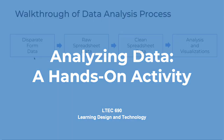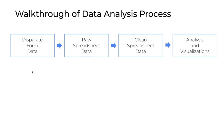We're going to go through a four-step process. We'll start from disparate form data — a demographic survey, a pre-test form, a post-test form, and some sort of retrospective or open-ended survey. We want to show how to turn those forms into raw spreadsheet data, then clean and organize it, and ultimately analyze and visualize that data.